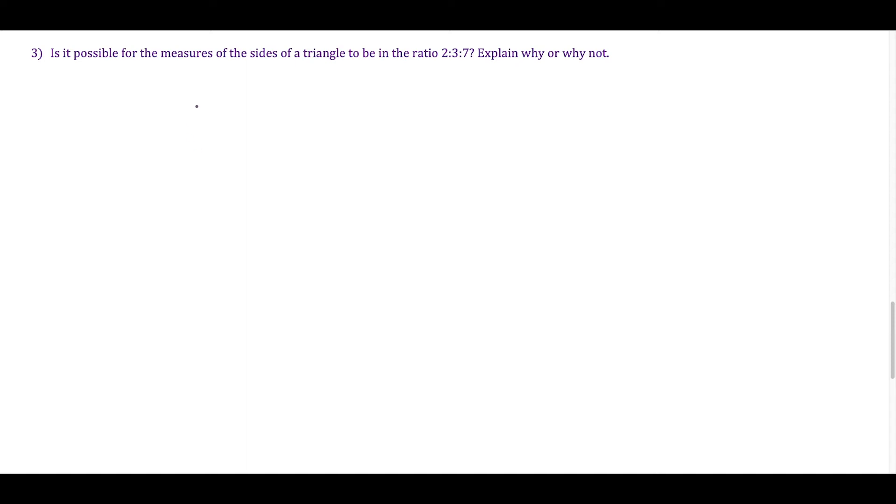Now for this last question, we want to know, is it possible for the measures of the sides of a triangle to be in the ratio of 2 to 3 to 7? We're going to use the same idea for ratios, that if I set up this ratio 2 to 3 to 7, I'm multiplying all of them by X. But this time around, I also have to add the specification that X has to be greater than 0, because I'm not going to be setting anything equal here. I'm not going to be doing 2X plus 3X plus 7X equals 180. That would be a very bad trap.